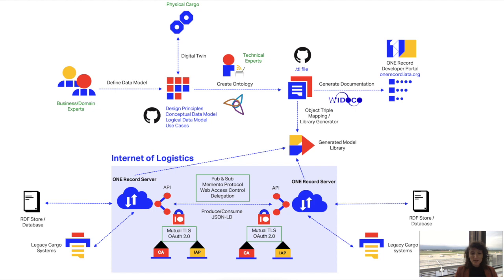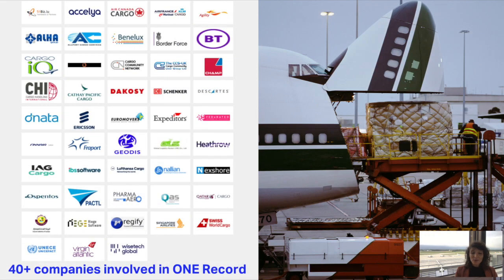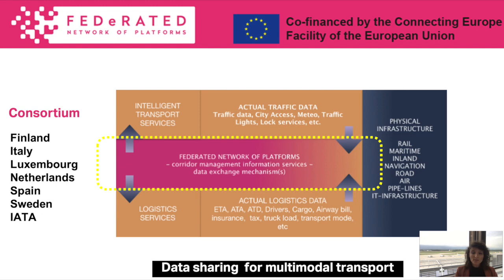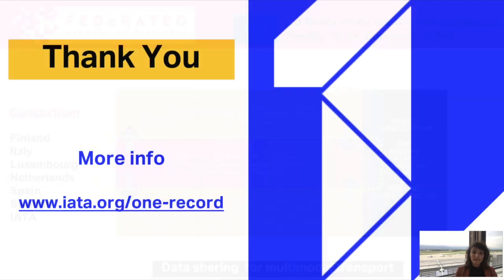The main part of this schema is what we call the Internet of Logistics — essentially the existing OneRecord servers together with security providers and interfaces. Currently more than 40 companies are involved in OneRecord; some are already live with their products and others will be soon, with this number increasing constantly. We are also involved in a consortium called Federated, co-financed by the European Union, which aims at creating a federated network of platforms enabling data sharing for multimodal transport.